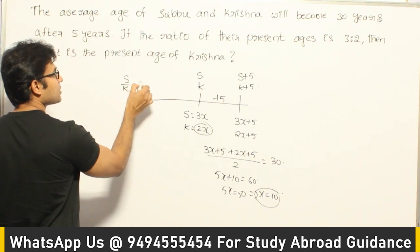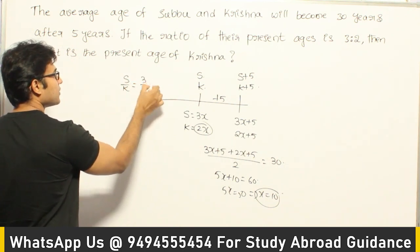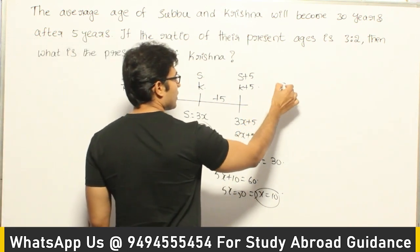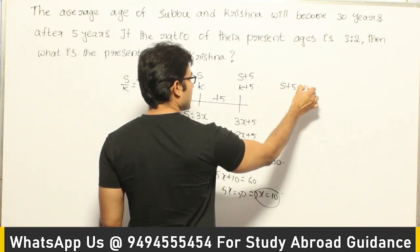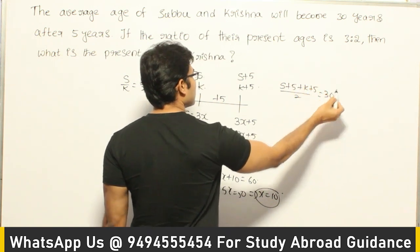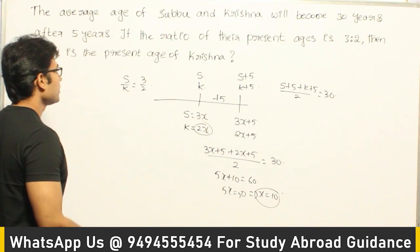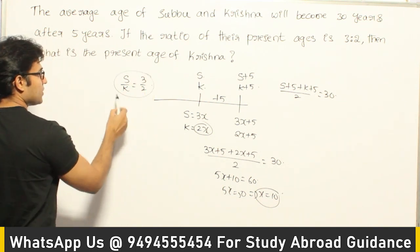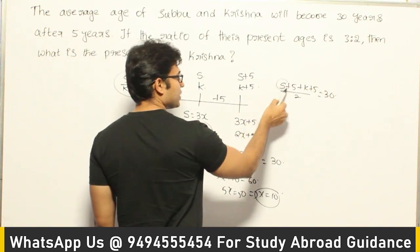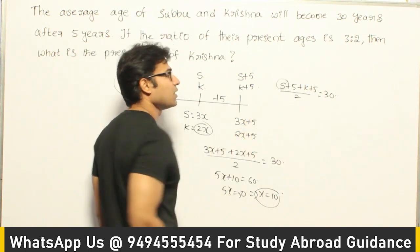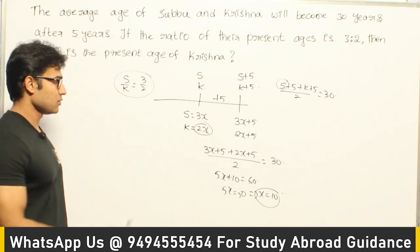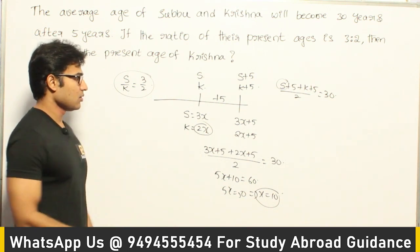S divided by K equals 3 by 2 is given. And we know that (S + 5 + K + 5) divided by 2, the average, is equal to 30. You can take the relationship S = 3K/2, substitute the value of S, and find out the value of K. Both methods give the same answer.